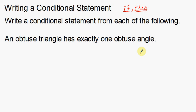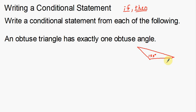You might need a picture to help you out with this. There's the obtuse angle, there's the obtuse triangle. If I really wanted to, I could say that this angle is 153 degrees. That gives you a visual of what we're talking about. An obtuse triangle has exactly one obtuse angle.